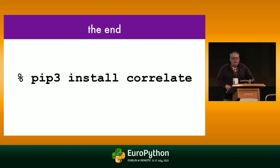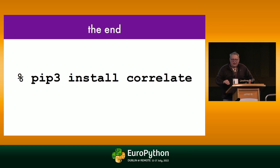That's really everything. I wrote a lot of documentation for Correlate, which is set up on GitHub, and you can of course install it with pip3. Thanks for your time.